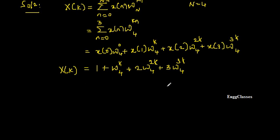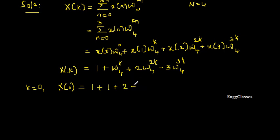Now I find the different values of X(k) for k equal to 0, 1, 2, 3. Putting k equal to 0: W_4 to the power 0 is 1 throughout, so I get 1 plus 1 plus 2 plus 3, which equals 7. Therefore X(0) = 7.